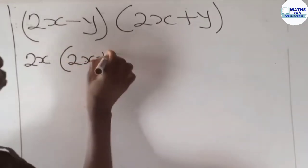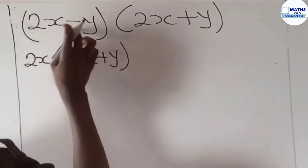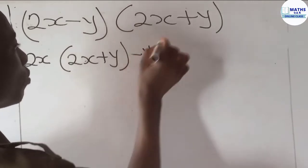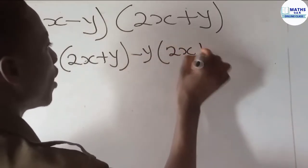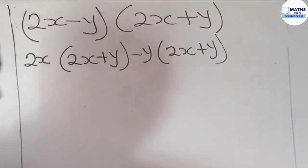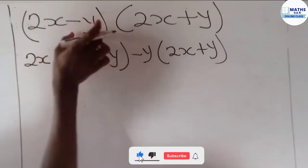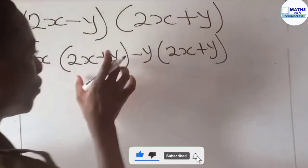And we have negative y, which also multiplies the (2x + y), then we close the brackets. So you see that each of the terms here has been used to multiply each of the terms here.